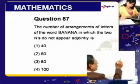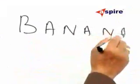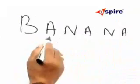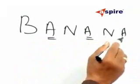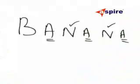The given word is banana. You see a is repeated three times, n is repeated twice.